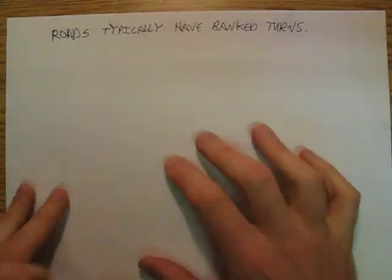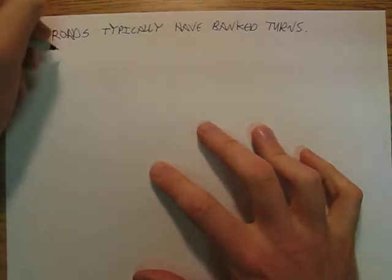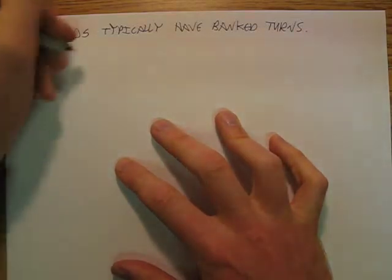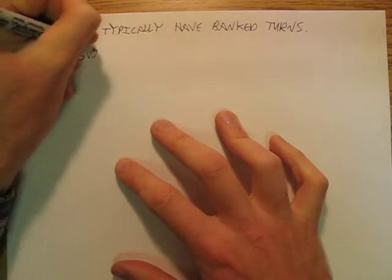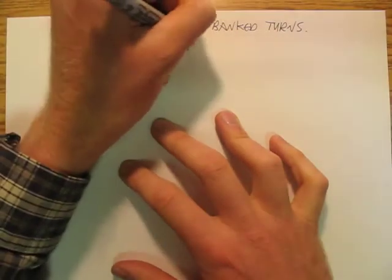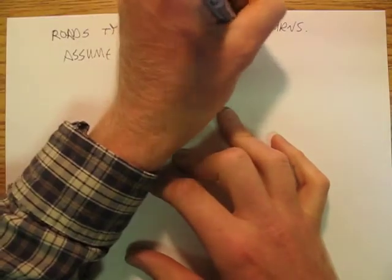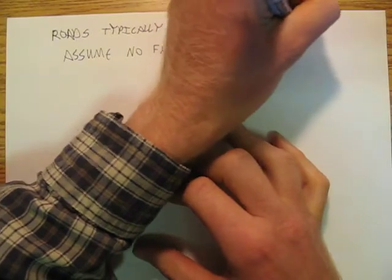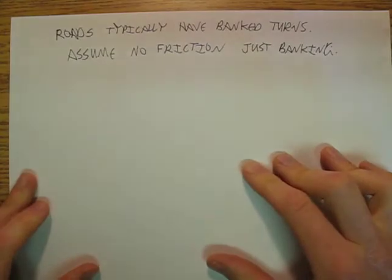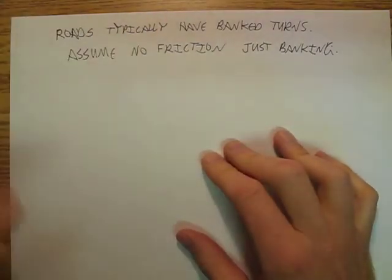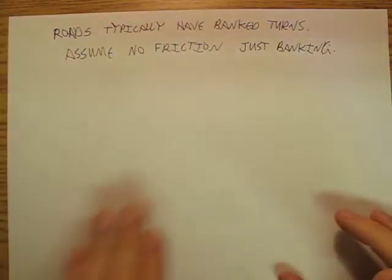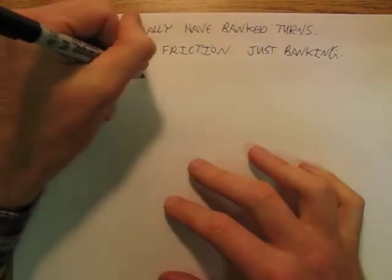Okay, and so what we have is, so let's assume no friction, just banking. Okay, so now this is really hard for me to draw. You have to imagine that the road is sort of banked and curving around, and we're just going to look at a slice of that.